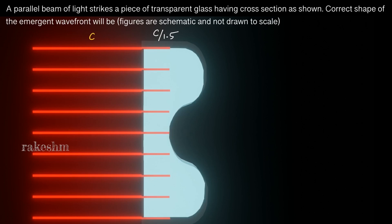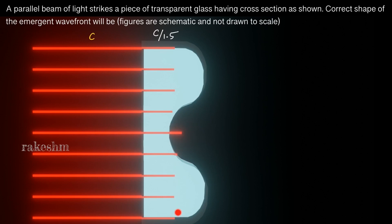Now some part of light moves from glass back to vacuum, and its speed increases to c again. This part of light has gone outside the glass, so it has traveled even more distance than the points still inside. Now the wavefront will look like this — inside it will be planar, and outside there will be a bulge, and then again planar.